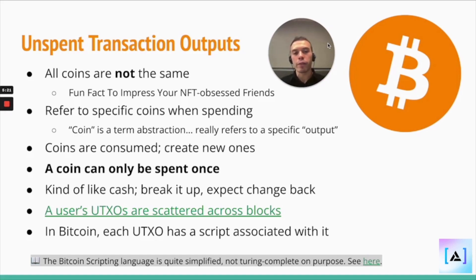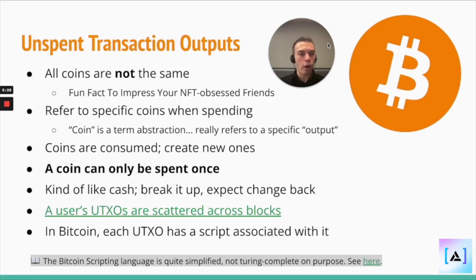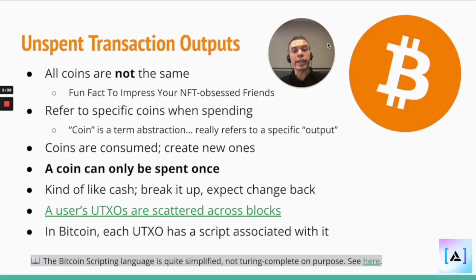Say you pay for a car using a UTXO worth 10 Bitcoin, and the car is worth 8 Bitcoin — the way Bitcoin works is you'd actually get a UTXO back worth 2 Bitcoin, your change.